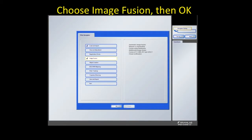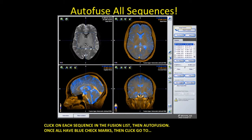Choose image fusion and then hit OK. You can now auto fuse all sequences. Click on each sequence in the fusion list and then auto fusion. Once all have blue check marks, click go to at the top.